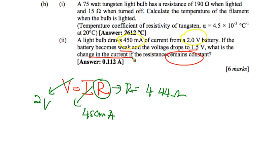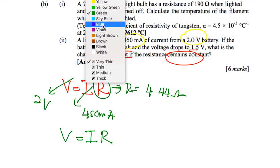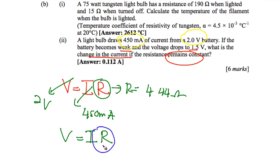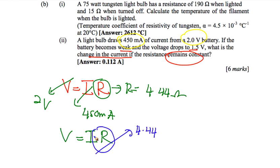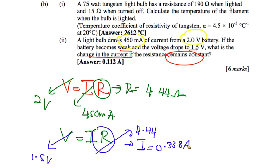Now, when the battery becomes weak and the voltage drops to 1.5 volt, you again use V = IR, with the resistance remaining constant at 4.44 ohm and V = 1.5 volt. The new current I = 0.338 ampere.